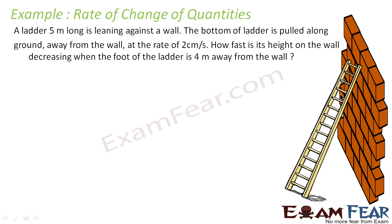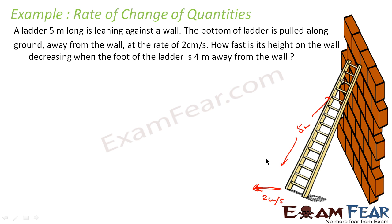This is my wall and this is my ladder. The ladder is 5 meters long — the whole length is 5 meters. The bottom of the ladder is pulled along the ground, so there is a push from here and this end is moving in this direction at a rate of 2 centimeters per second. The question is: how fast is the height on the wall decreasing? Because the moment you pull this side, the new ladder position will be something like this — if you pull the ladder, the new position shifts and the height is also decreasing.